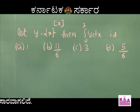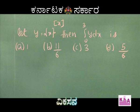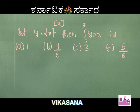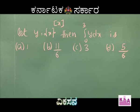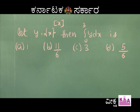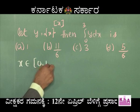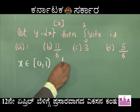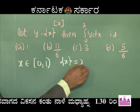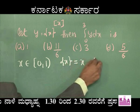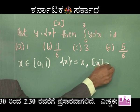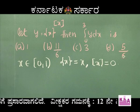The next problem: if y = {x}/[x] (fractional part of x over integral part of x), find ∫₀³ y dx. Options: A) 1, B) 11/6, C) 3, D) 5/6. When x ∈ (0,1), the fractional part of x is x itself, and the integral part of x is 0.